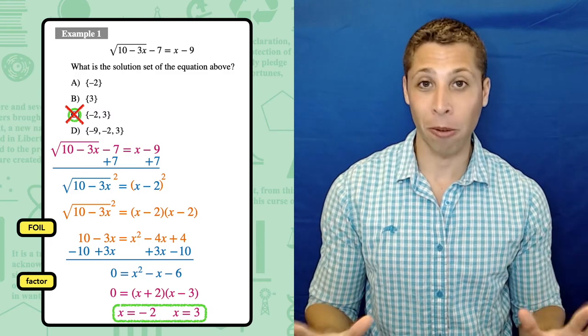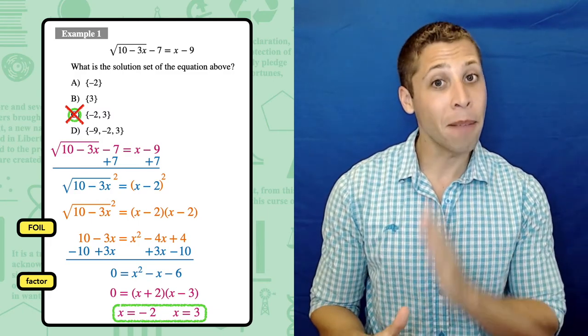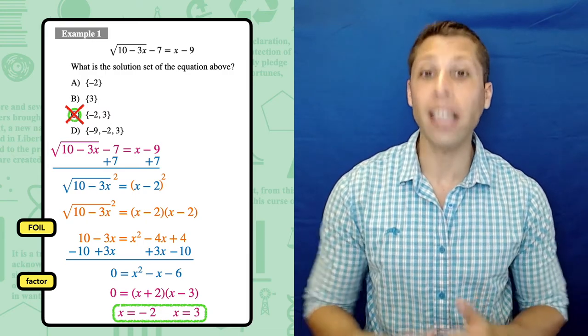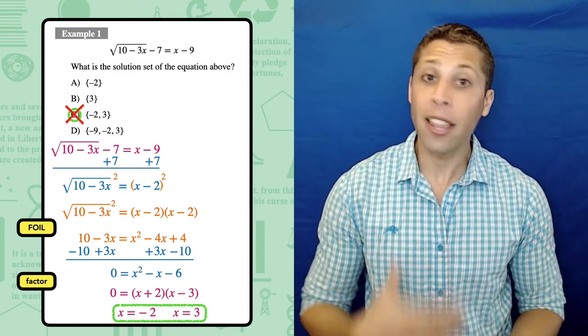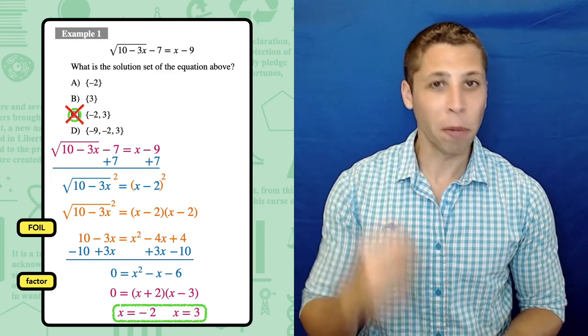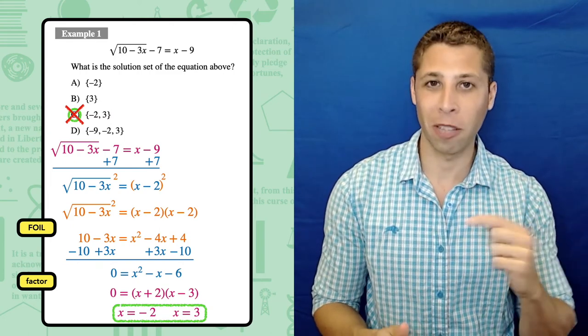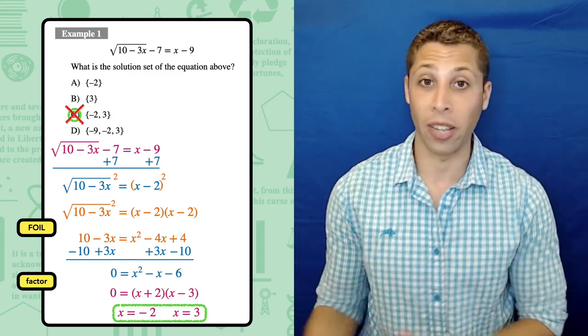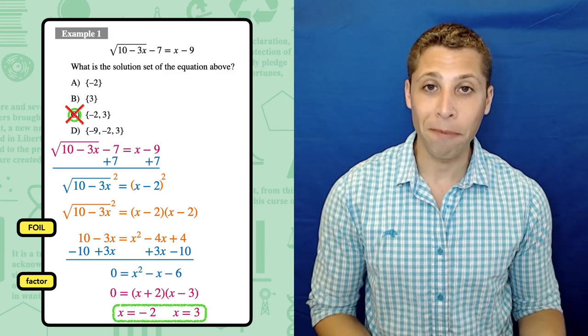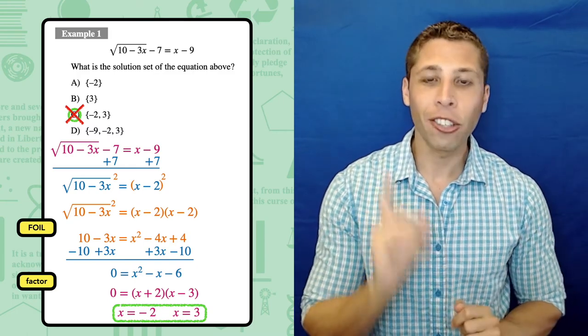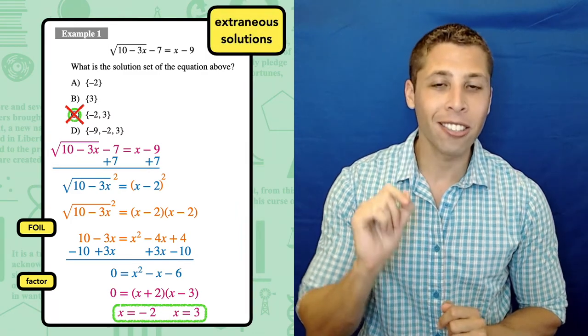Now, I want to be very clear, all of this algebra is correct. There were a lot of steps and many of them were very difficult and we could have very easily made a mistake somewhere along the way that we might not have noticed. But that's not what happened. If your math teacher did this exact question on the board in school, he or she would get the exact same answers that we did. x equals negative 2 and x equals 3. But we forgot something. We forgot to check for extraneous solutions.